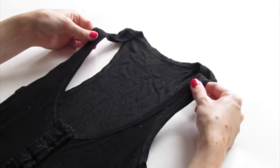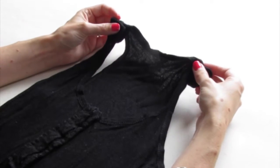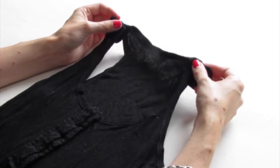So if you have a tank top that's a bit too low and you want to make it a bit higher, I'm going to show you an easy way to just cut the straps shorter and then sew them together.